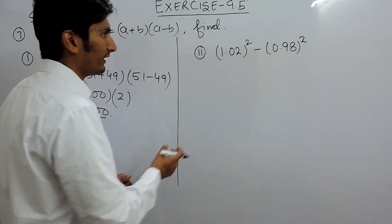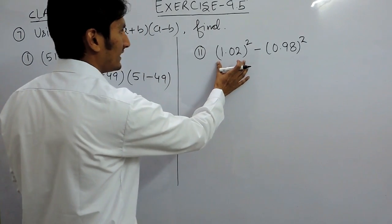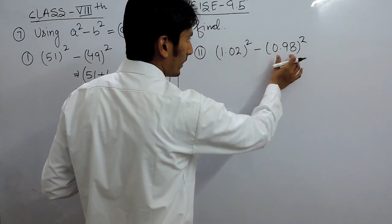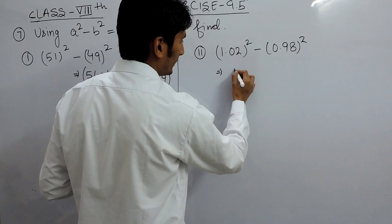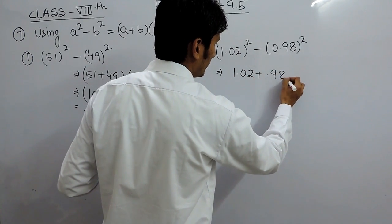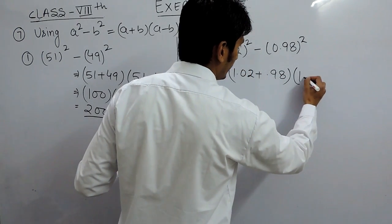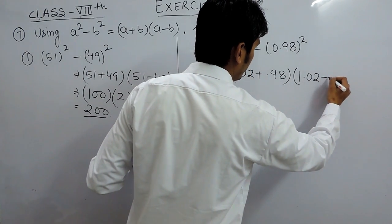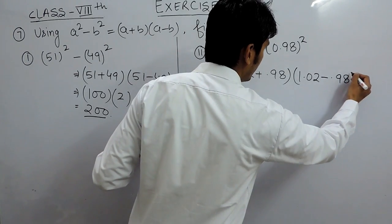Similarly, if we have to solve this, again this is a² minus b², so this should be equal to (a+b) into (a-b).